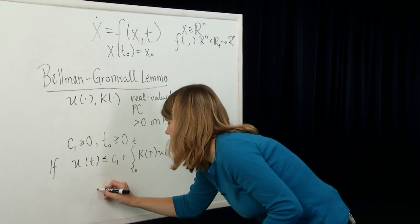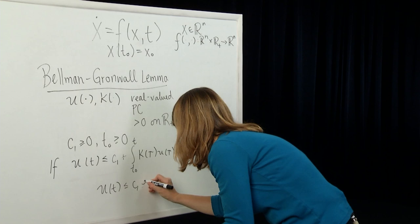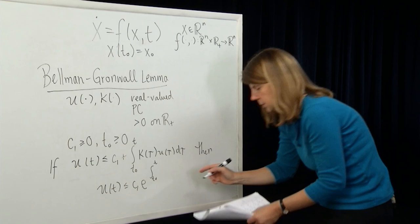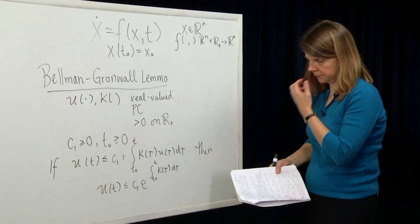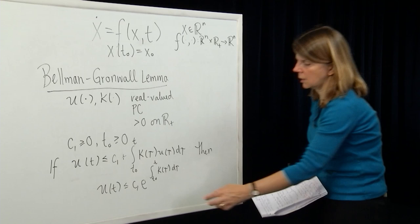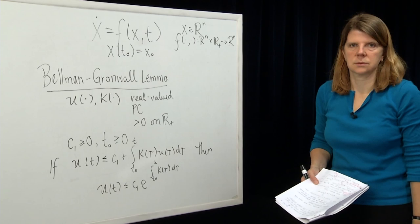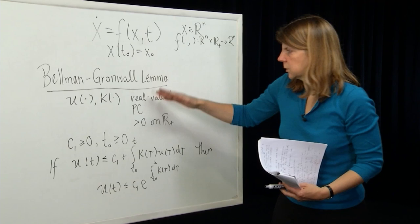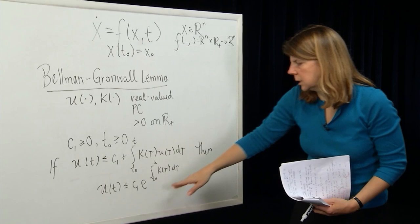So in the first inequality, the function u appears on both sides. In the second inequality, u just appears on the left-hand side, and that's often a more useful bound to have when you're trying to show uniqueness of functions. We'll see why when we apply this. Basically, the setup of Bellman-Gronwall says that if you have such a structure of functions and constants and can be bounded by the first inequality, then you can show that it can be bounded by the second inequality.